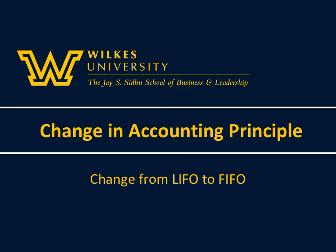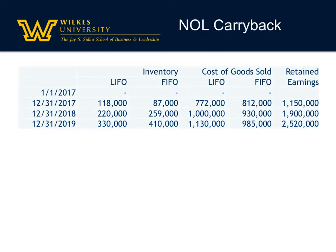Here's an example on how to handle a change in accounting principle. For this specific example, we're going to talk about a change from LIFO to FIFO, but other changes in accounting principle should be handled similarly. For our example, we're going to imagine that the company began in 2017, so there was no beginning inventory, but there was ending inventory and LIFO was selected. Sometime in 2019, the company made the decision to switch to FIFO, and that's great because that's IFRS policy.